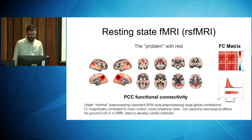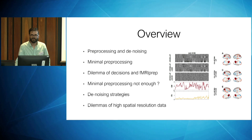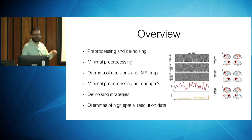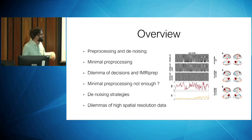Moving forward to my overview: I'll go through some definitions of terms between pre-processing and denoising — they're both under the umbrella of pre-processing but I'll split them up. I'll talk about minimal pre-processing steps, the dilemma of decisions, using fMRIPrep to hopefully reduce this dilemma, and show you some artifacts you get. I'll go into denoising, and if I have time, look at some high resolution fMRI data.